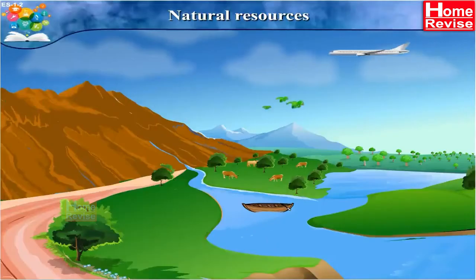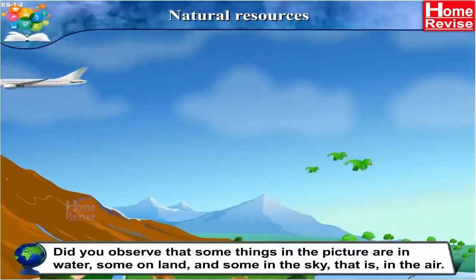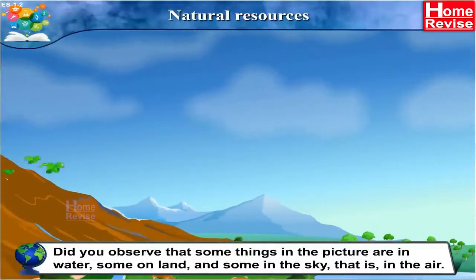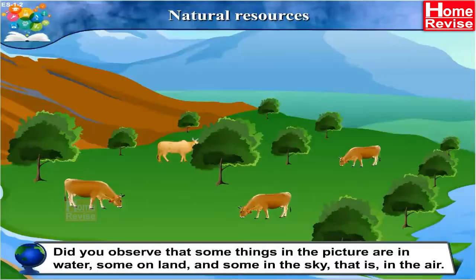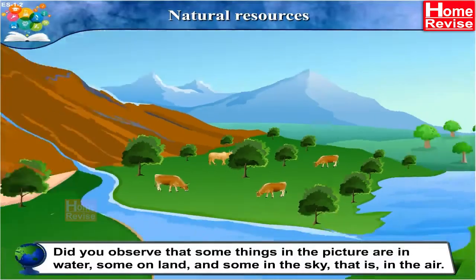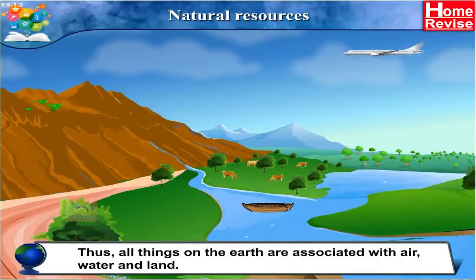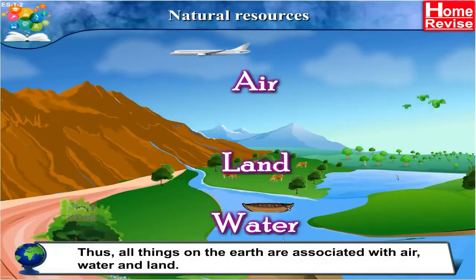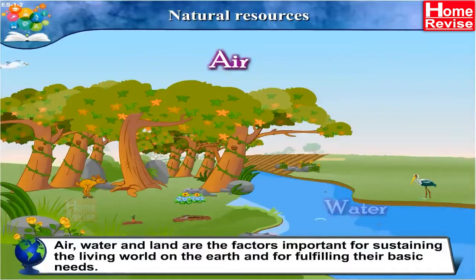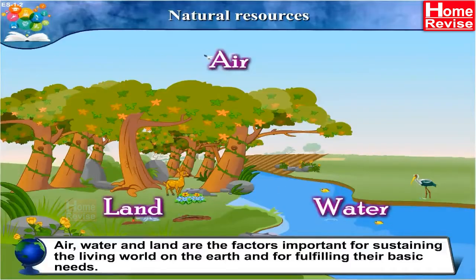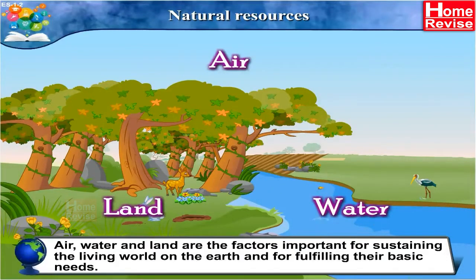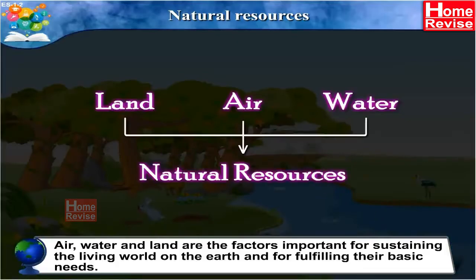Natural Resources. Students, did you observe that some things in the picture are in water, some on land, and some in the sky, i.e. in the air? All things on the earth are associated with air, water and land. Air, water and land are the factors important for sustaining the living world on the earth and for fulfilling their basic needs. They are called natural resources.